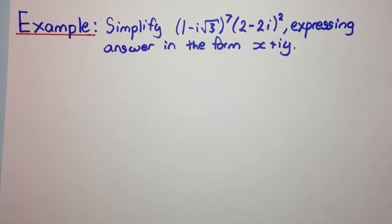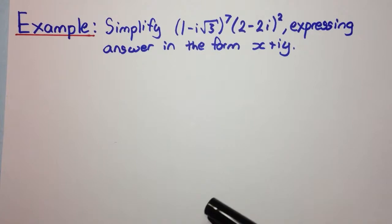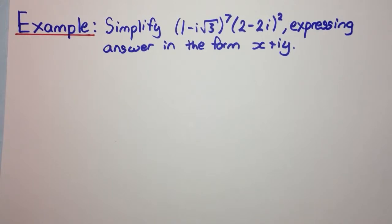Okay, welcome to today's video everyone. So in this video we'll be seeing how to use De Moivre's theorem. The question says simplify (1 - i√3)^7 times (2 - 2i)^2, expressing answer in form x + iy.